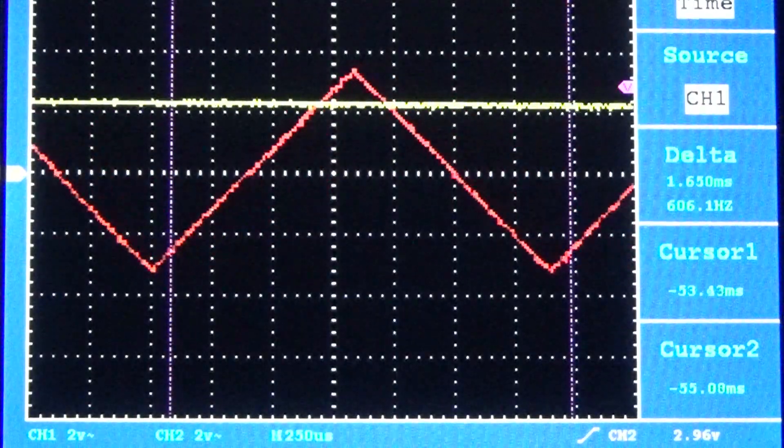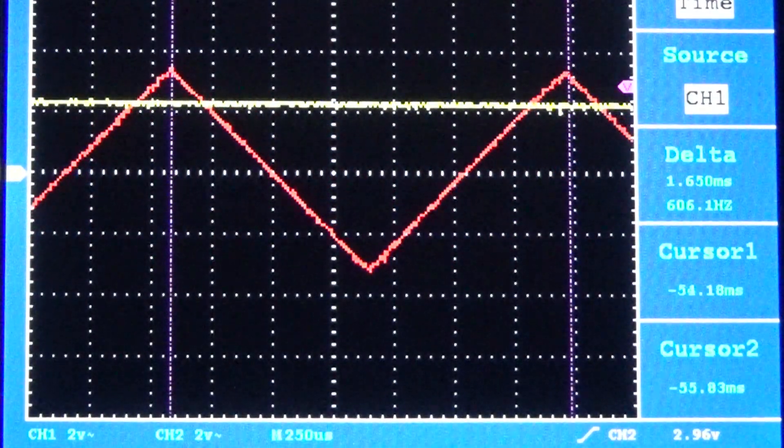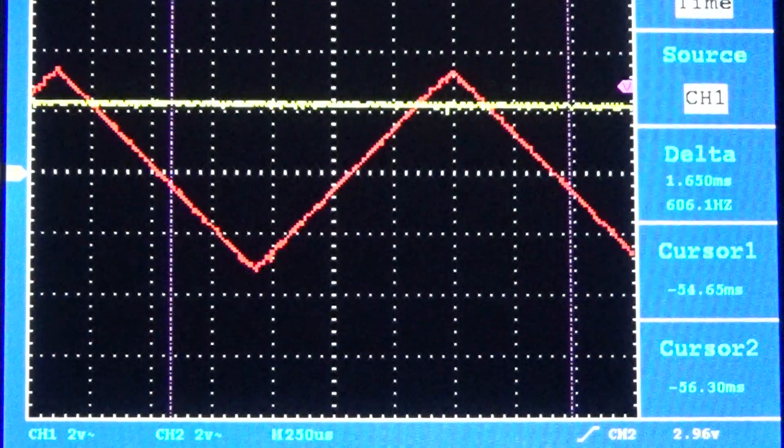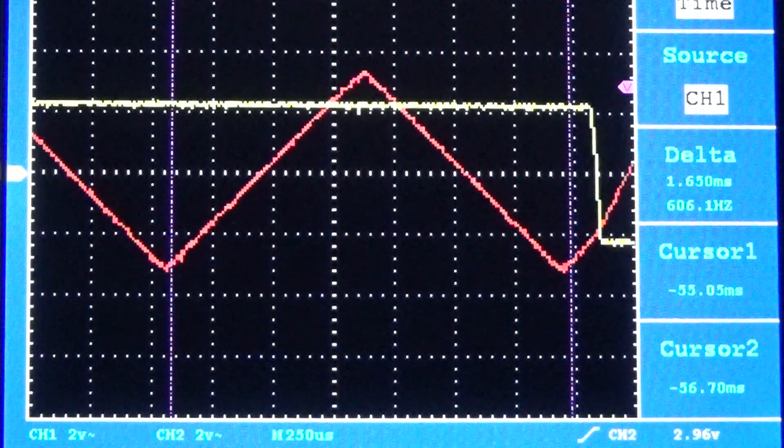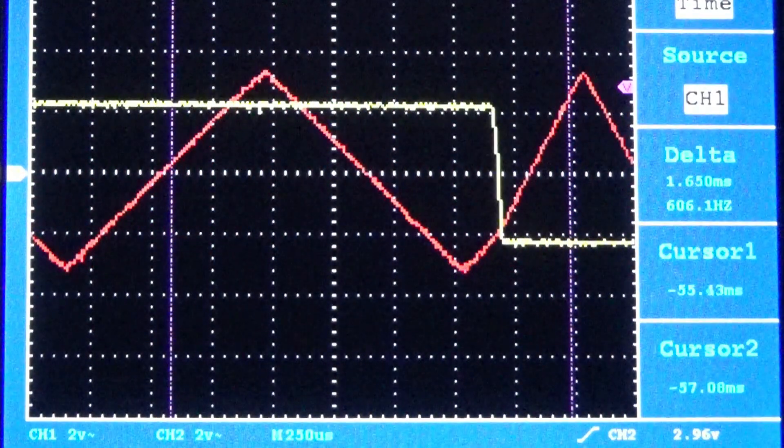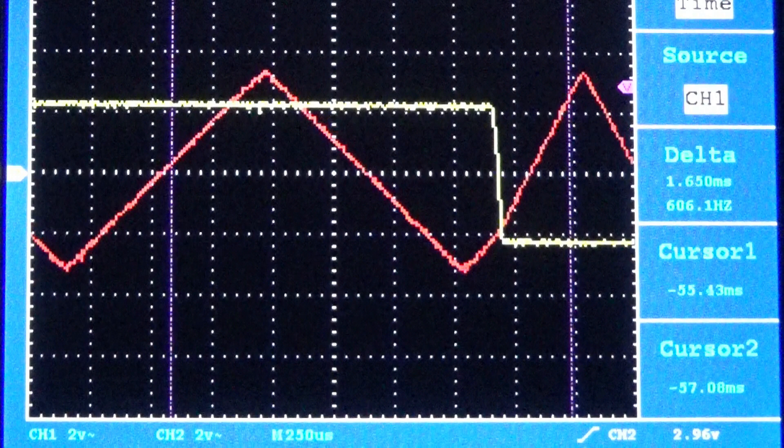This is the basic idea of frequency modulation. Control the output frequency by the amplitude of the message signal. One thing to note is the slope of the output signal when the message is high and when the message is low.